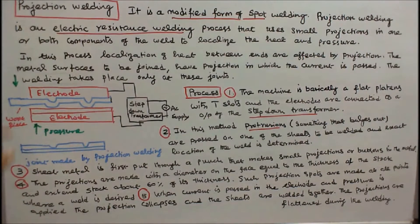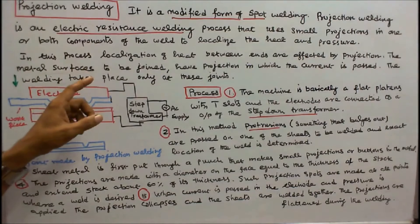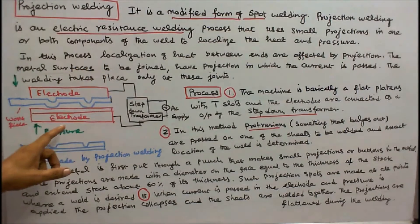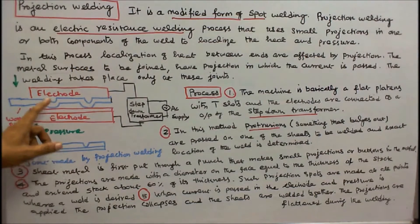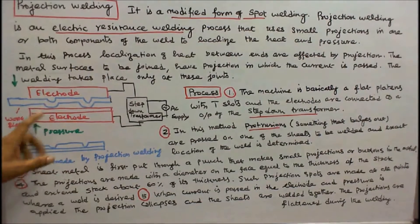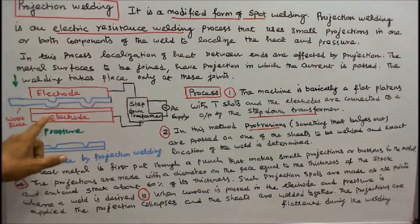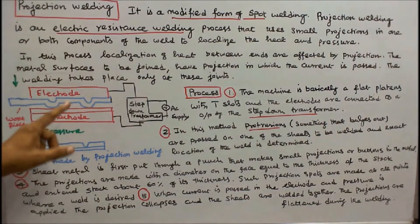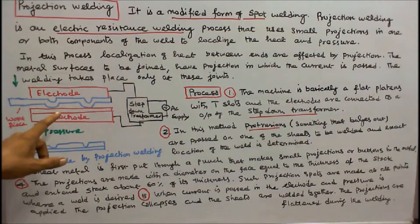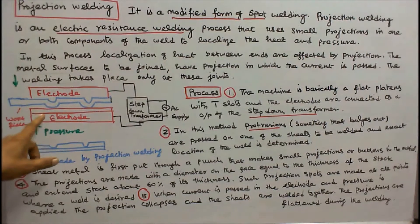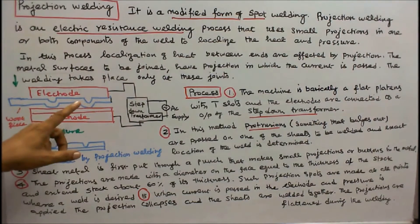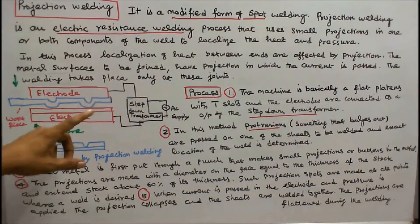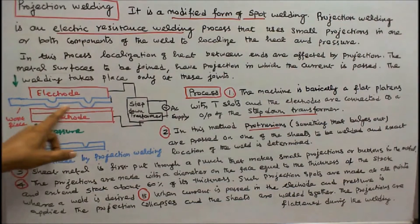In this process, localization of heat between ends is affected by projections. The metal surfaces to be joined have projections in which the current is passed. Welding takes place only at these joints.